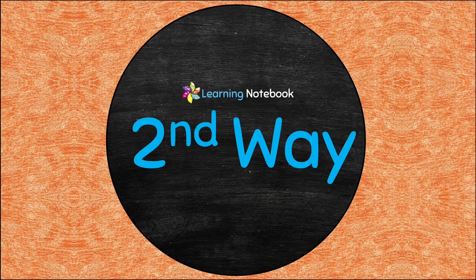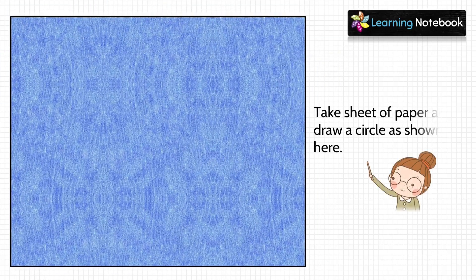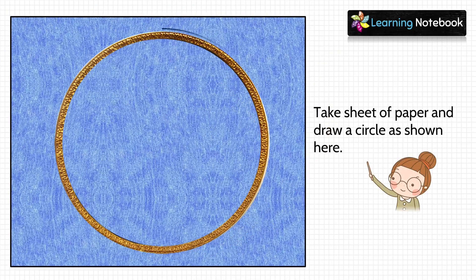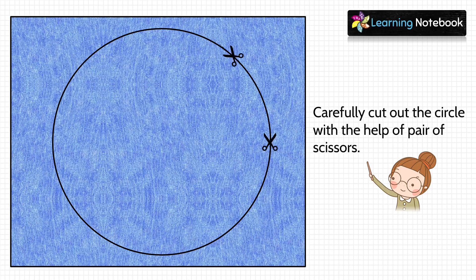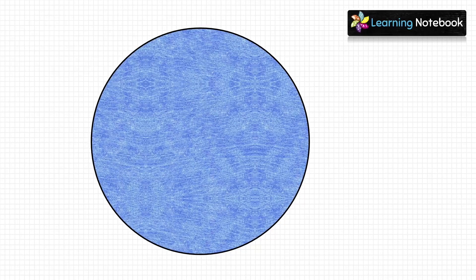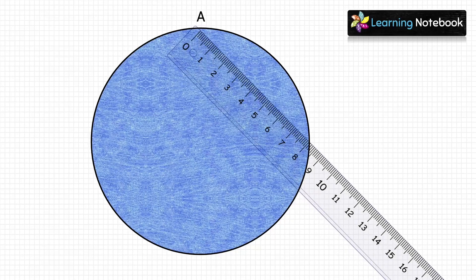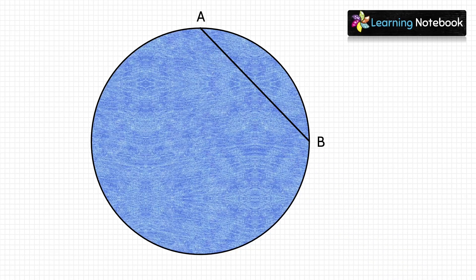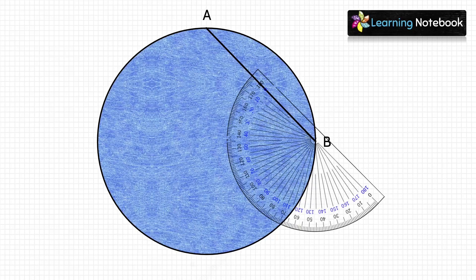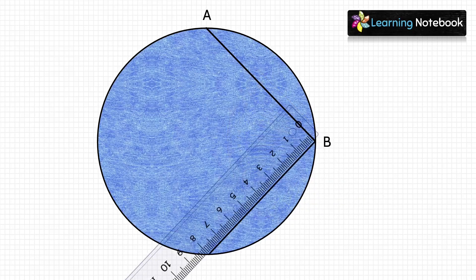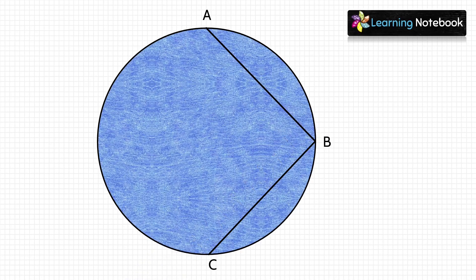Now let's understand the second way to find the center of any given circle. Take a blue sheet of paper and draw a circle on it using a bangle, then carefully cut it out. Take any two distinct points A and B on this circle, join them, then using a protractor draw an angle of 90 degrees from point B — this meets the circle at point C.